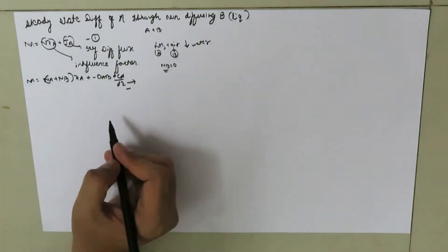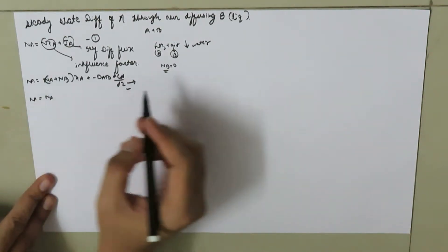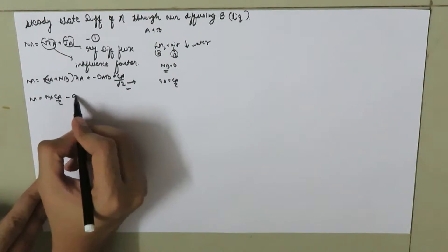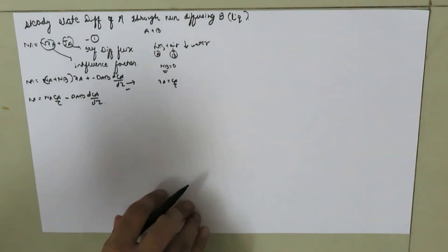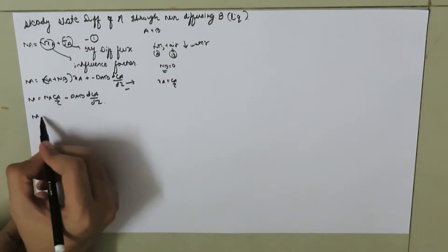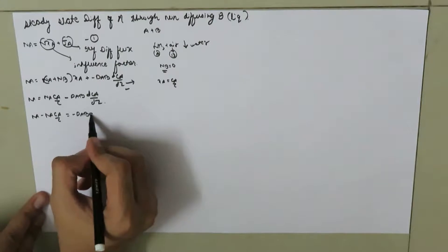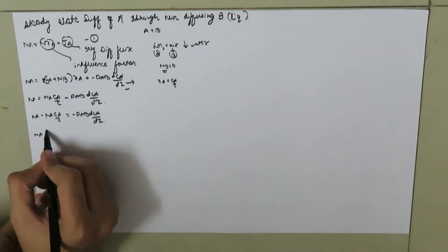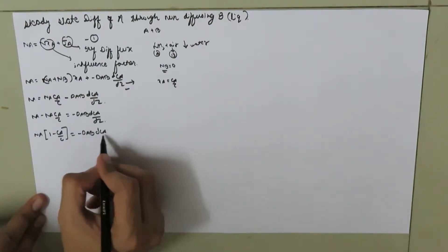When we put NB = 0 in the equation, we get Na = Na·(CA/C) − DAB·(dCA/dZ), since XA = CA/C. Rearranging: Na − Na·(CA/C) = −DAB·(dCA/dZ). Taking Na common: Na·(1 − CA/C) = −DAB·(dCA/dZ).